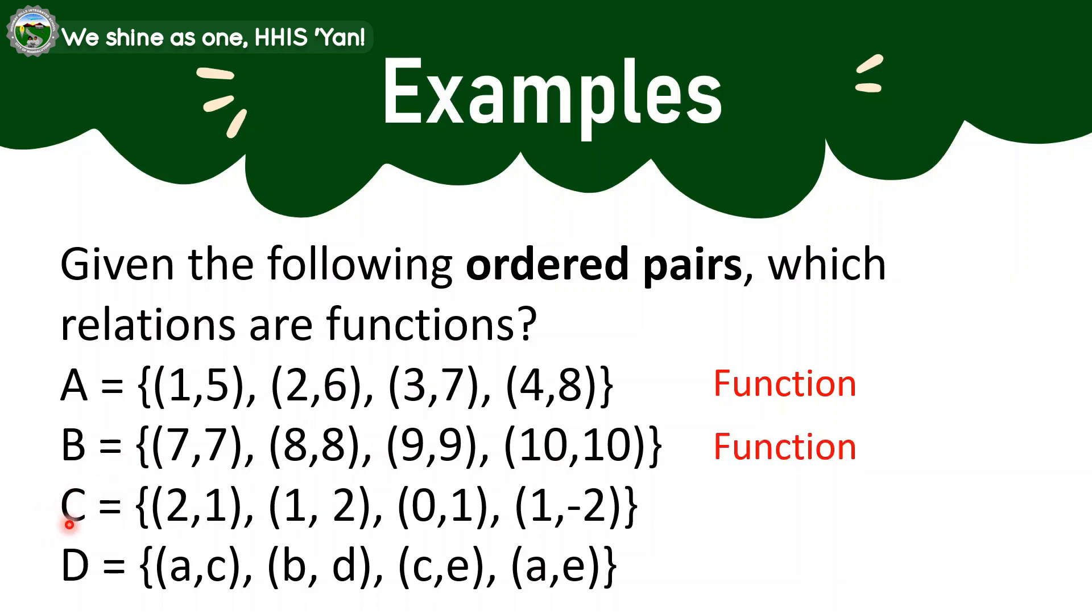Let us have now the set C: 2,1, 1,2, 0,1, 1,negative 2. So inspecting our first coordinates, which we consider as the domain: 2, 1, 0, and 1. So if you try to see it or observe it, there is an element which is repeated in the domain, that is the 1. The 1 is being paired with the 2 and then the negative 2. Hence, the set C is not a function.